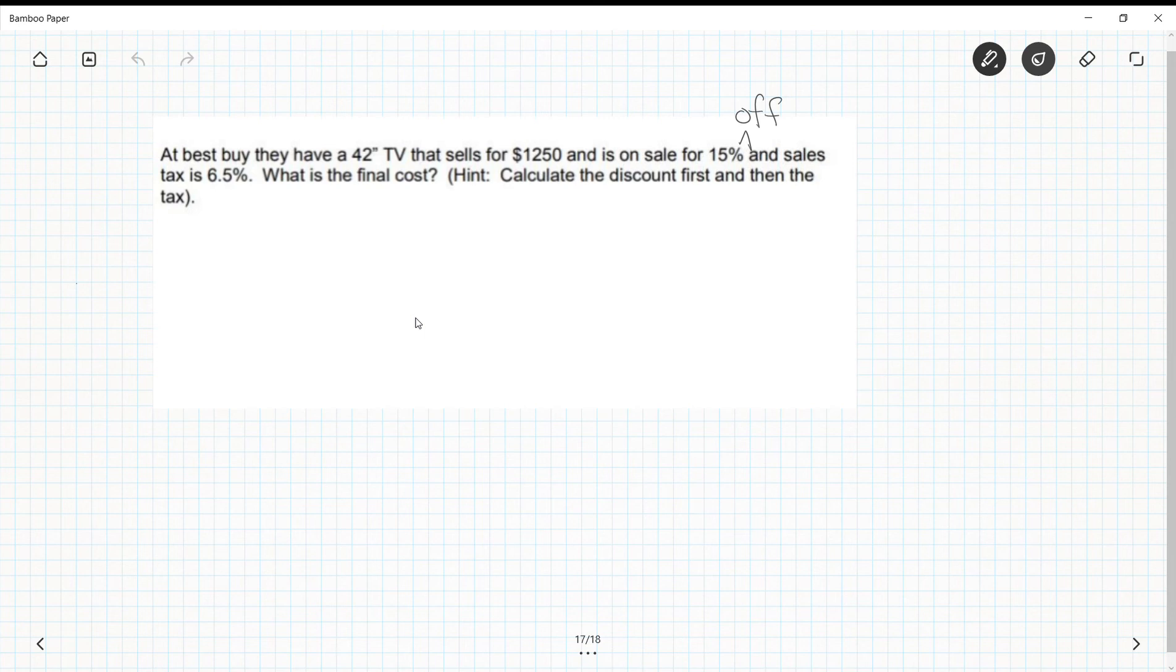So first I have to take 15% off. If you remember from the last lesson, I need to do my original times the 100% minus 15%, so I get 1250 times 0.85, and I get that to be $1062.50. Well now I need to take tax on this, so I'm going to do my original plus original times tax.